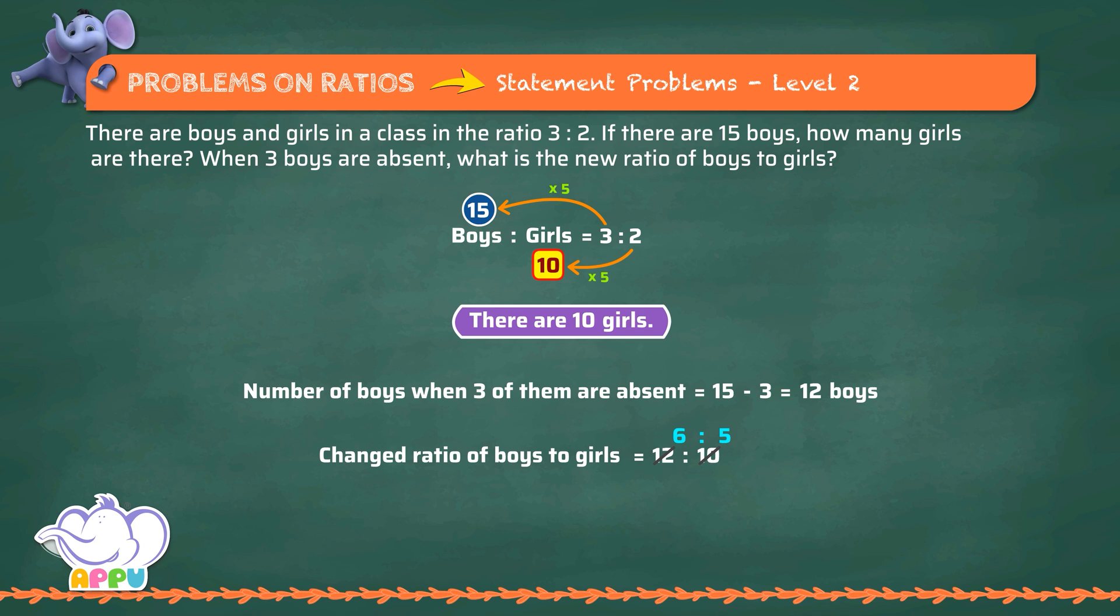So, when 2 boys are absent, the new ratio of boys to girls is 6 is to 5.